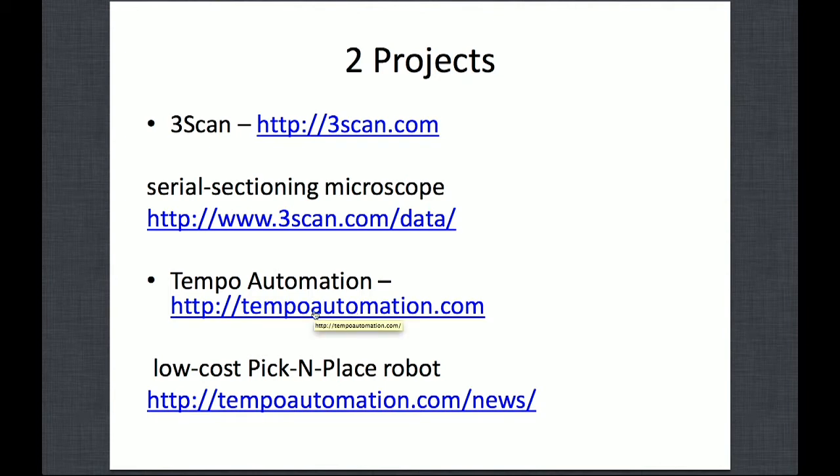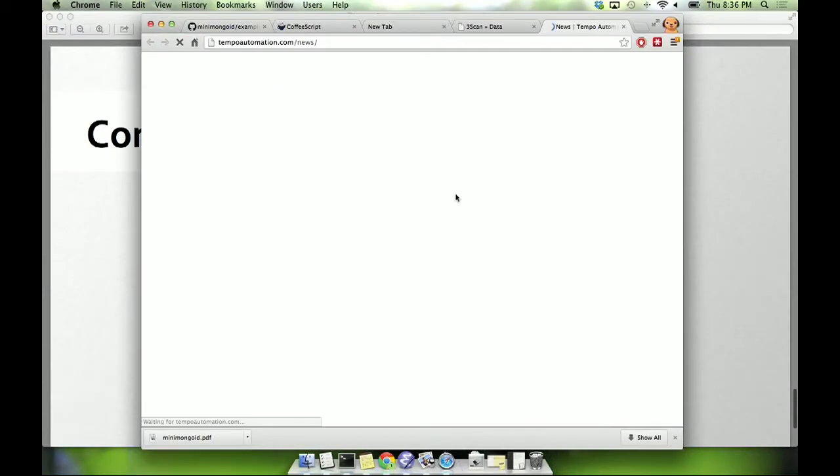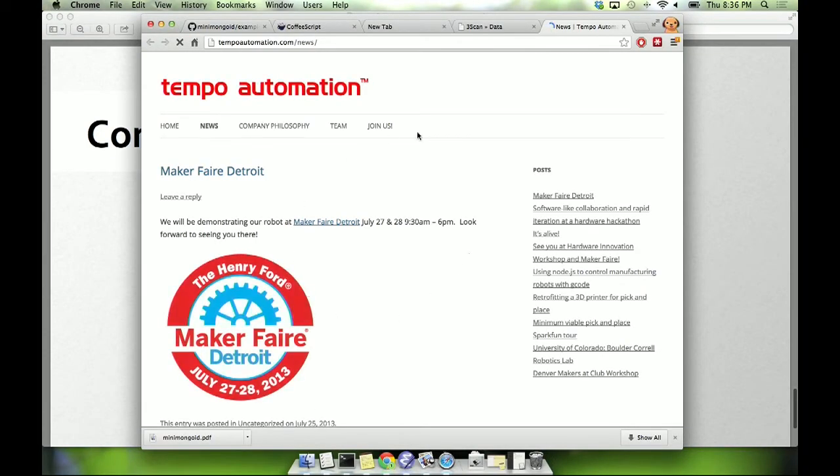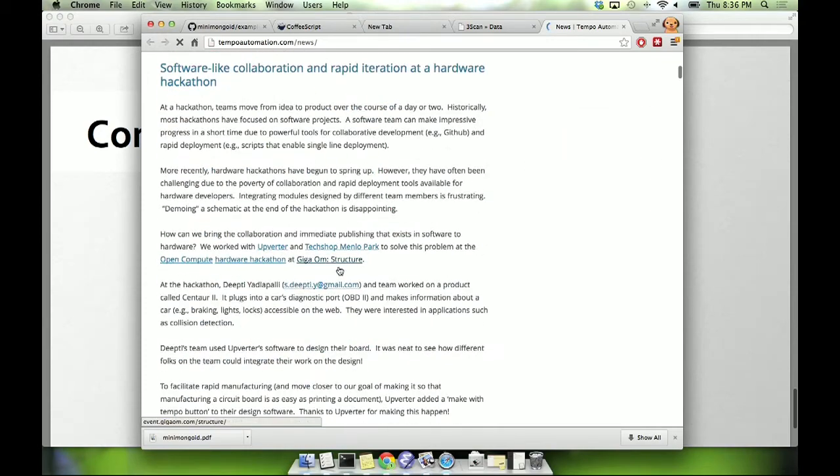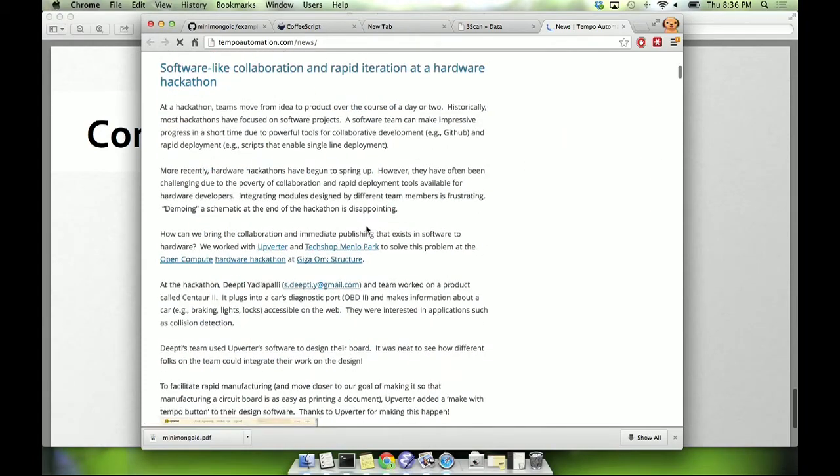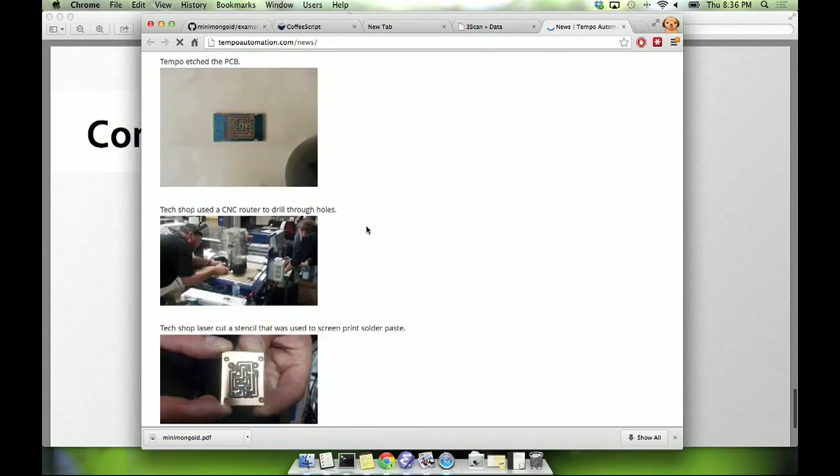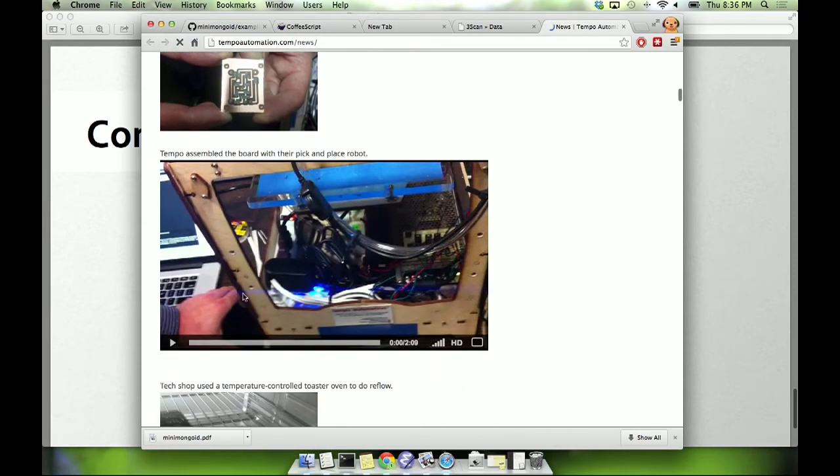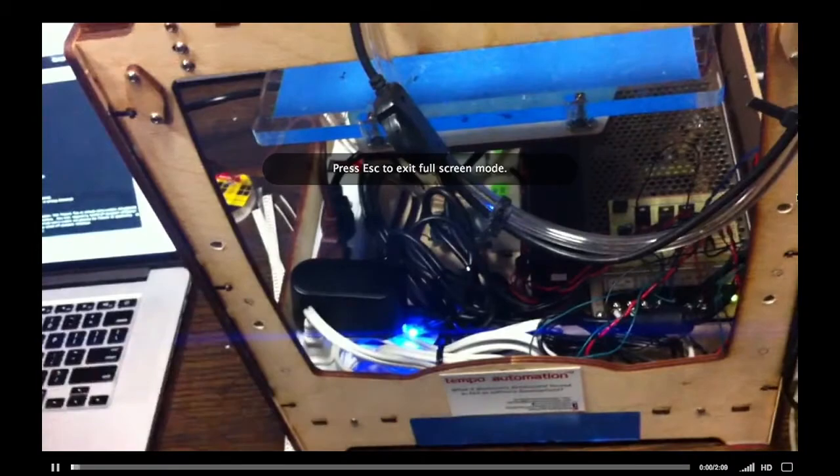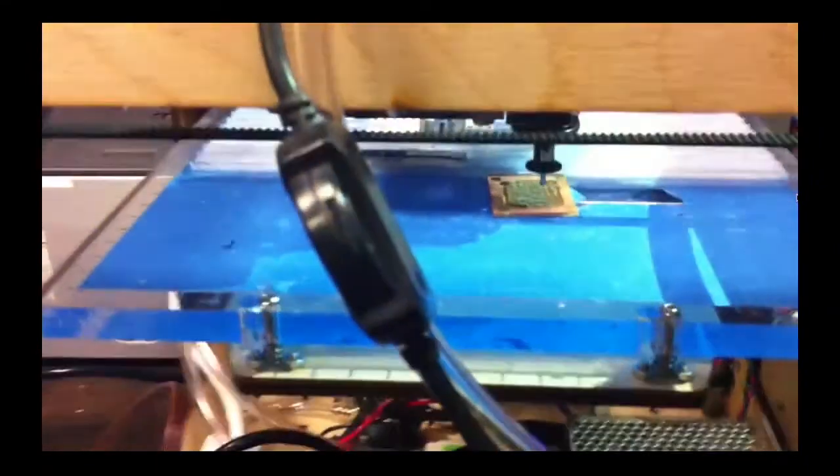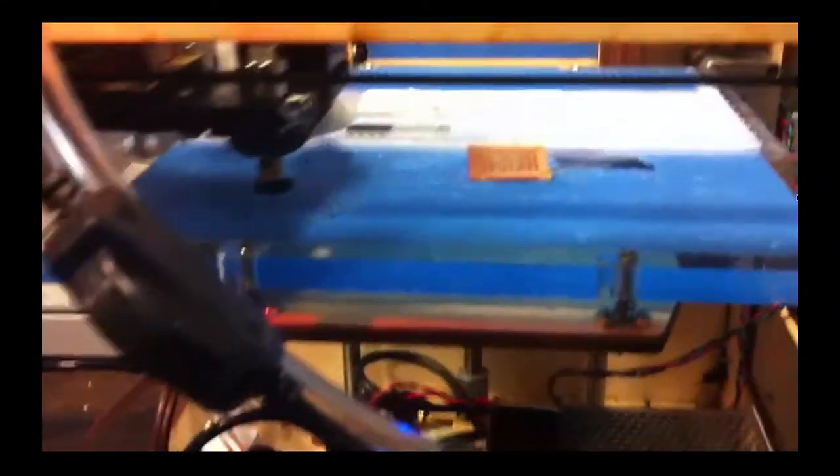And the other one is a pick and place robot, which is for if you have a circuit board with surface mount components, this will, you can upload a design file that specifies the schematic for your circuit board and it will place all the parts onto the board for you. These are typically designed for large-scale manufacturing processes, but this is designed for short run and prototyping. So here it is at a Facebook hackathon recently placing a part.